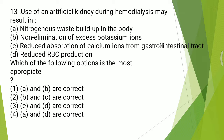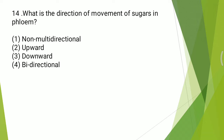Thirteenth question: use of an artificial kidney during hemodialysis may result in — nitrogenous waste buildup in the body; non-elimination of excess potassium ions; reduced absorption of calcium ions from the gastrointestinal tract; or reduced RBC production. The most appropriate answers are C and D — reduced absorption of calcium ions from the gastrointestinal tract and reduced RBC production.